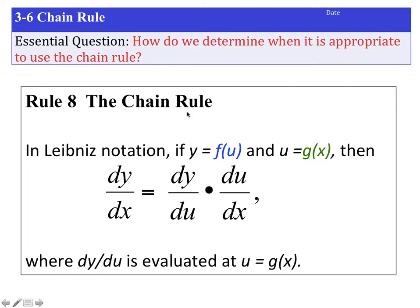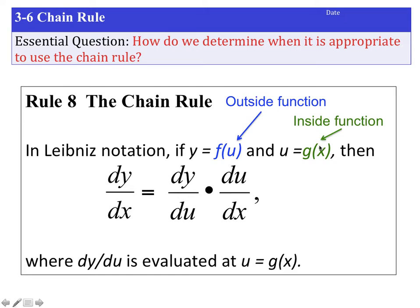The chain rule works like this: if we have a function y and a function u, and we stick u into y, then we find the derivative by taking the derivative of function y with respect to u — the outside derivative — and multiplying it by the derivative of function u on the inside. The way to remember this: take the outside derivative times the inside derivative.